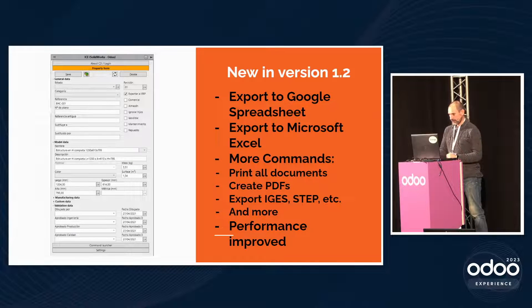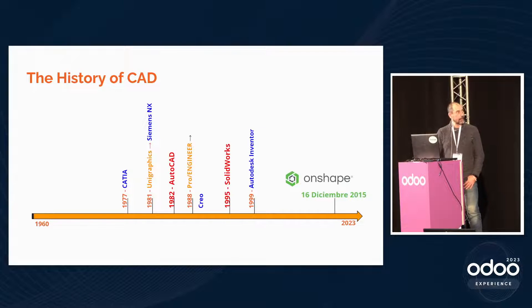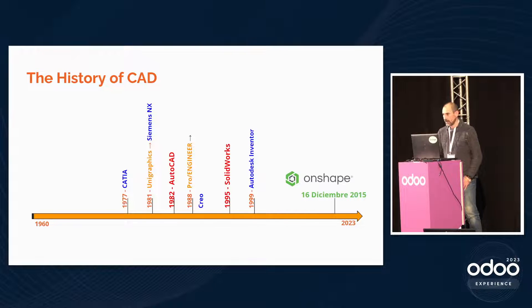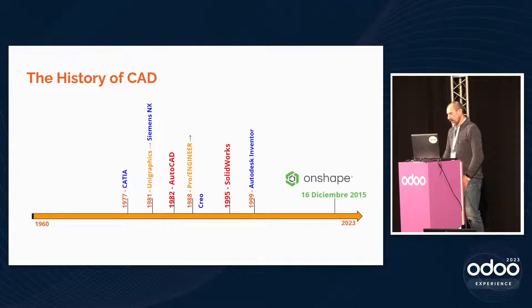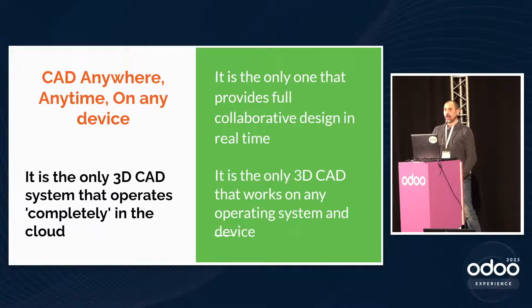This is about CAD and ERP in the cloud. The history of CAD begins in the 1960s, but since the last century there have been no big news in the history of CAD — until the introduction of Onshape. Onshape is CAD that works in the cloud. It's the only system that operates completely in the cloud and the only system that provides full collaborative design in real time. That means we can have 2, 3, or 30 engineers designing the same product, the same component at the same time, in real time.